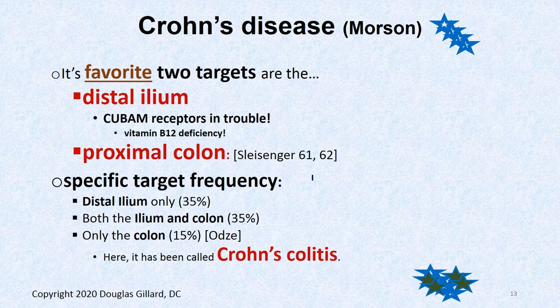The two favorite targets for Crohn's disease are the distal ileum — which should raise some ears because it contains the cubilin receptors, associating Crohn's with B12 deficiency. About 35% of cases are isolated to the distal ileum; another 35% affect the ileum and colon together; and 15% affect just the colon, which can be confused with ulcerative colitis and is given the special name Crohn's colitis.